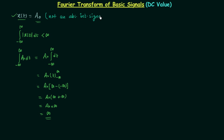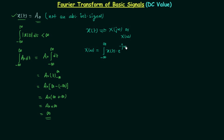As mentioned in the first lecture of Fourier transform, in order to calculate the Fourier transform using the formula, the signal must be absolutely integrable. The Fourier transform X(ω) equals the integration from minus infinity to infinity of x(t) multiplied by e to the power minus jωt dt. This formula is only valid for absolutely integrable signals. Since A0 is not absolutely integrable, we cannot use this formula for it.